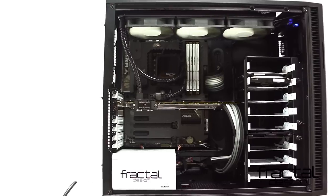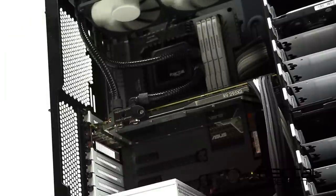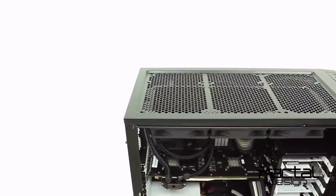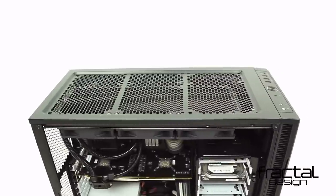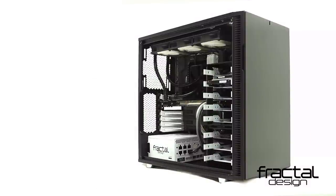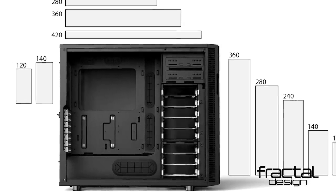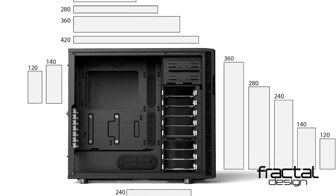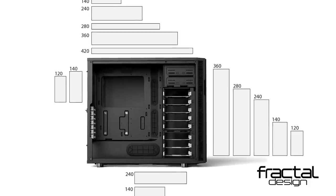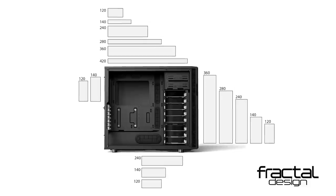You loved the R4, but you wanted even greater liquid cooling support. We listened. From the onset, the Define R5 has been designed to show that high-performance liquid cooling and quiet operation are not mutually exclusive. You can have both. The R5 offers truly impressive amounts of liquid cooling potential, supporting up to a 420mm radiator in the top panel, or a 360mm radiator in the front panel — even support for up to three 240mm radiators simultaneously.